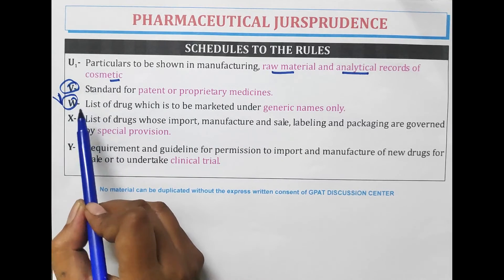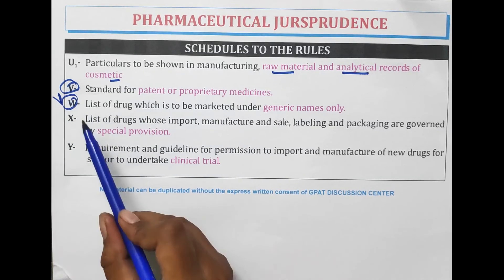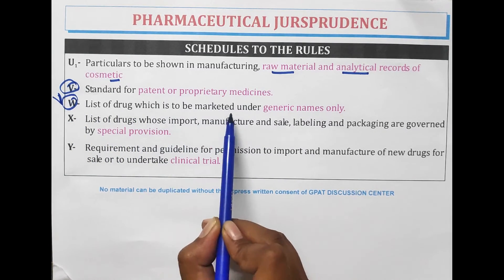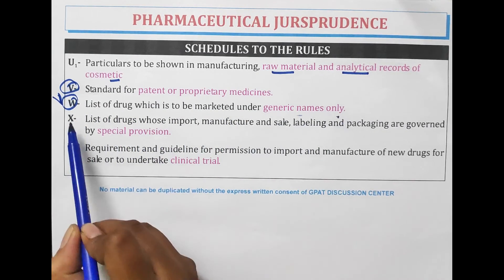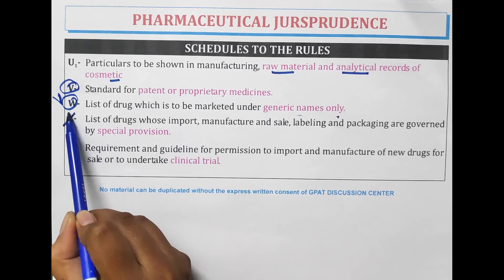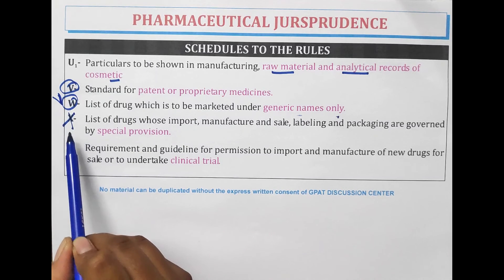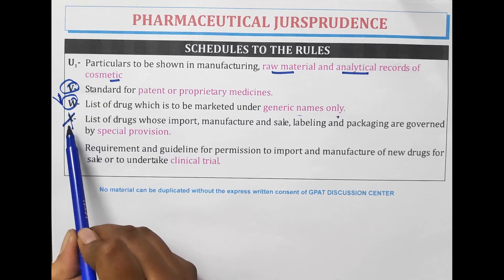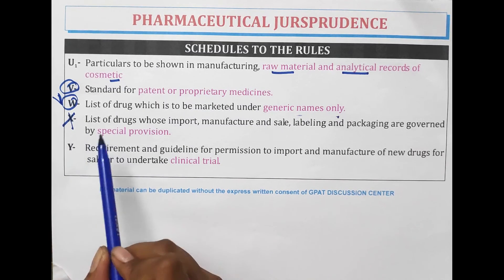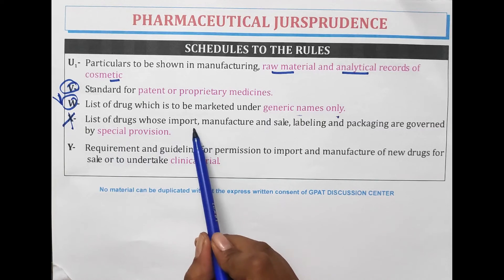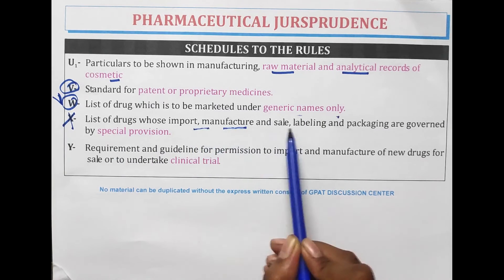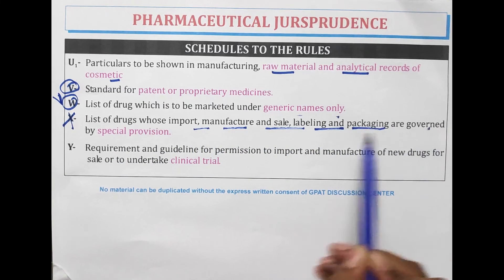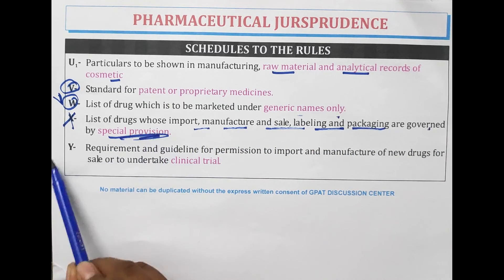Schedule W is for generic names — the list of drugs which are to be marketed under generic names. Schedule X covers psychotropic substances — the list of drugs whose import, manufacture, sale, labeling, and packaging are governed by special provisions.